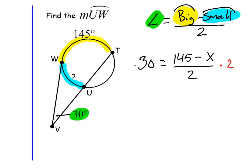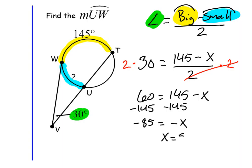Now it's time to solve this. Times by 2 on both sides to make the 2 go away from underneath our arcs. 60 equals 145 minus x. Now let's subtract 145 from both sides. I end up with negative 85 is equal to negative x. If negative x equals negative 85, then positive x equals positive 85. And there's my answer for x.